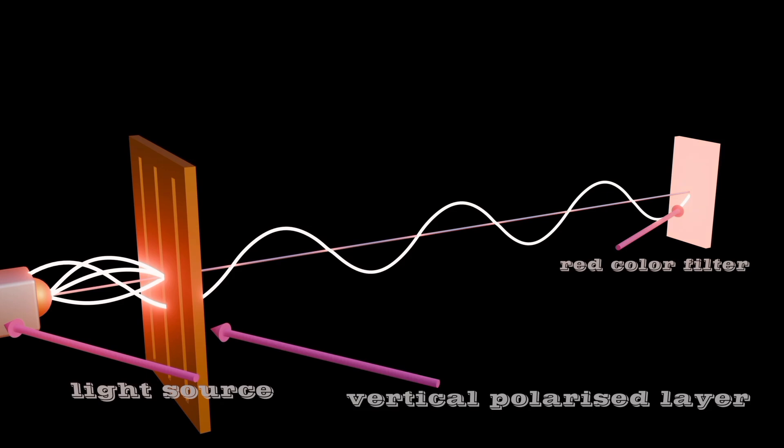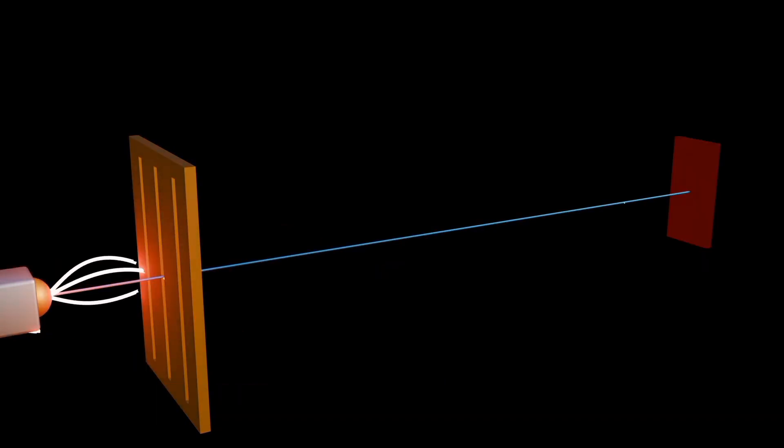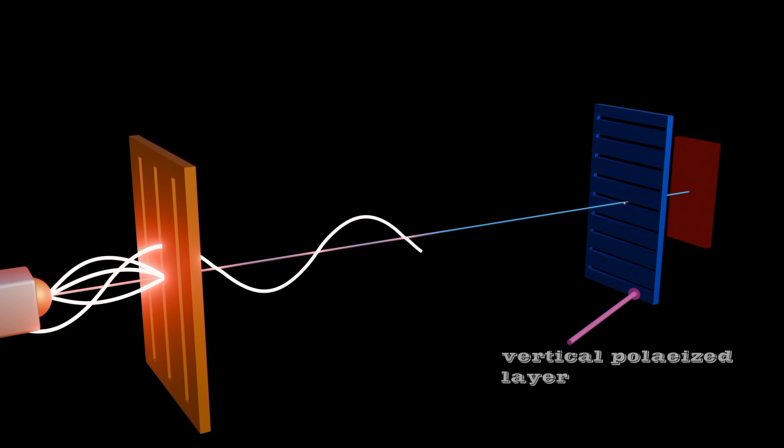When we add the horizontal polarizer, then the vertical spectrum will be blocked. Hence no light reaches the RGB color filter.